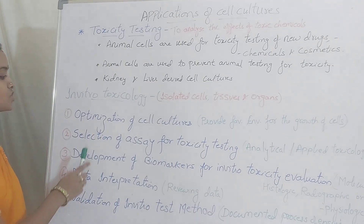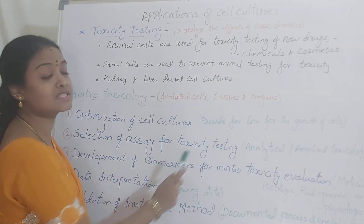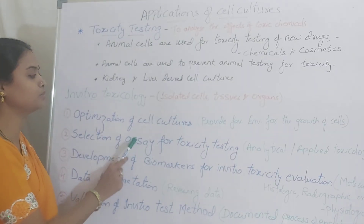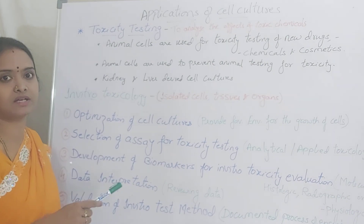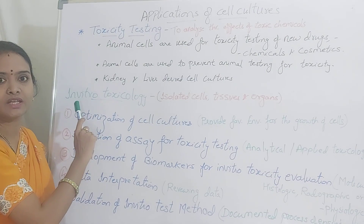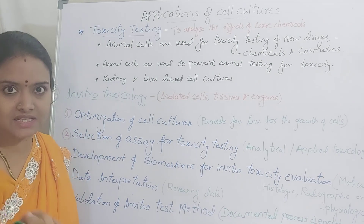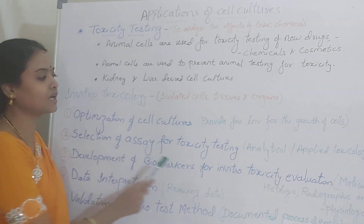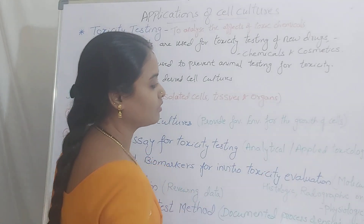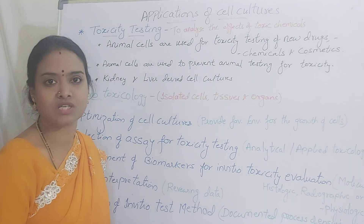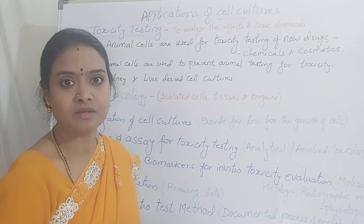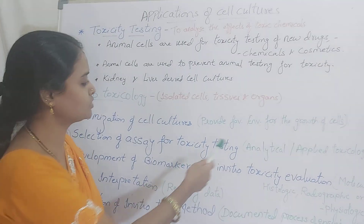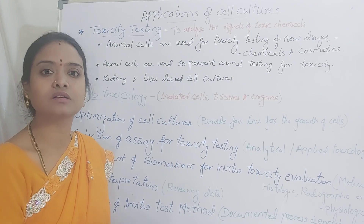The second step is selection of the assay for toxicity testing. You have to select what type of assay will be suitable for that particular drug on those particular cells. Based on the cell and the drug you are testing, you select the assay. It can be an analytical assay or it can be applied toxicology — that is, modern techniques. In the analytical approach, you are simply determining the chemical properties of that toxin.